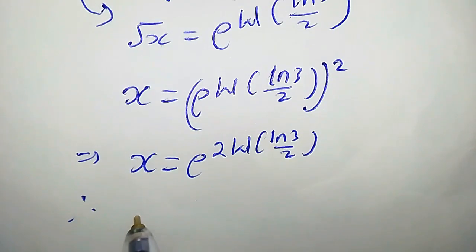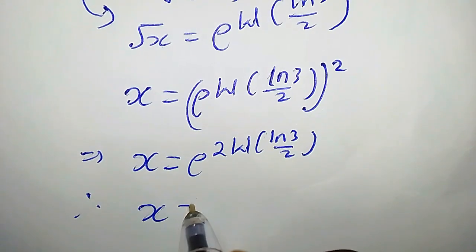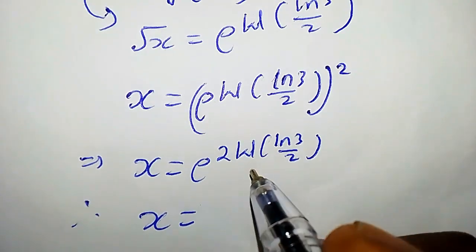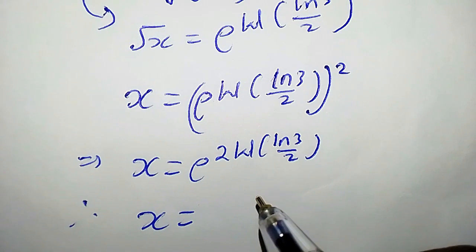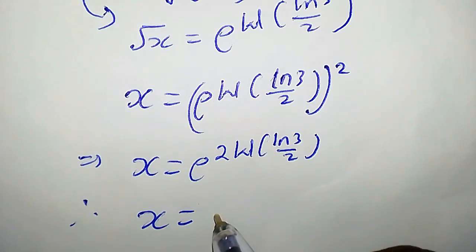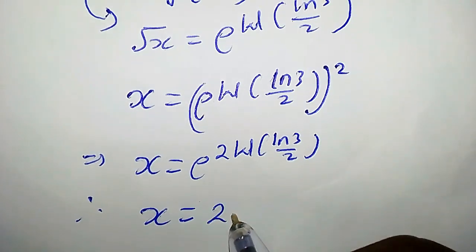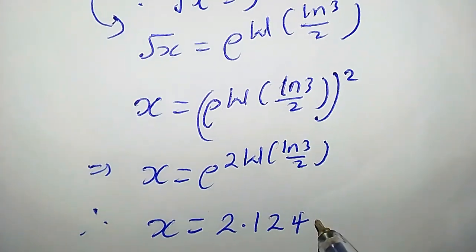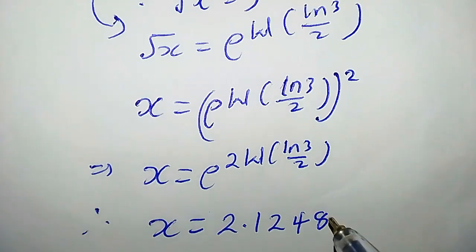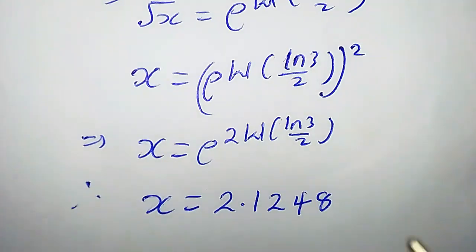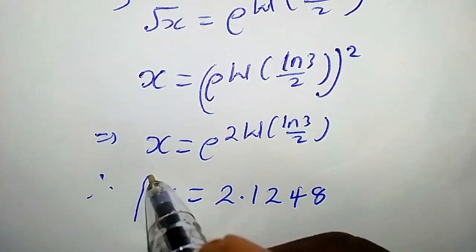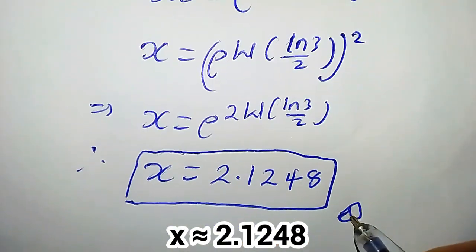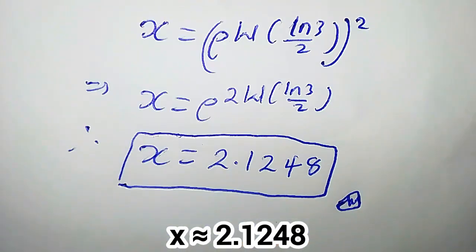Therefore, x equals e^(2·W(ln(3)/2)). If you plug this into the Lambert W function on Wolfram Alpha, you will obtain approximately 2.1248, which is the real solution. That is it for this video. Thanks for watching.